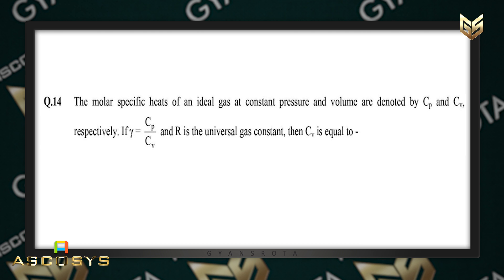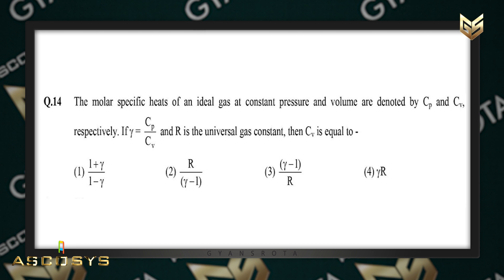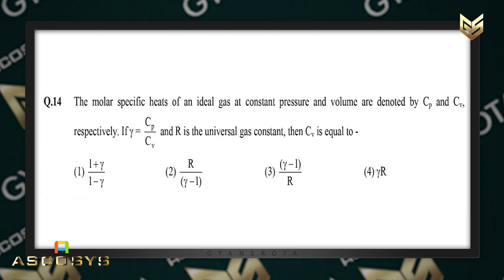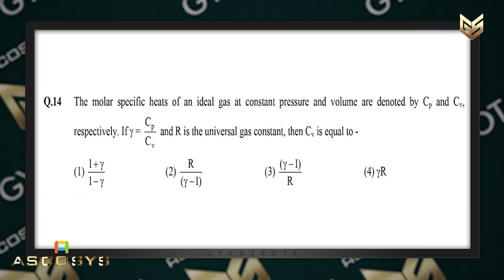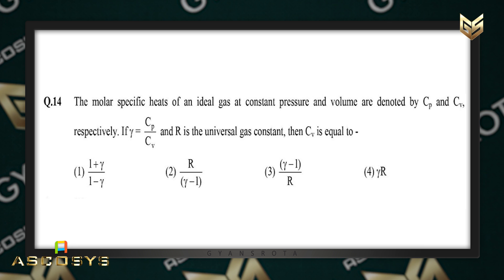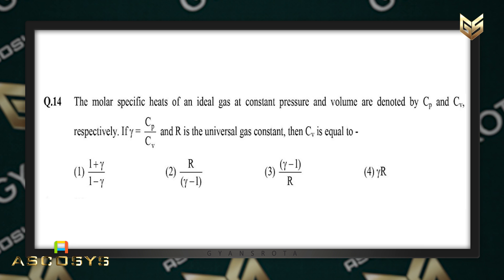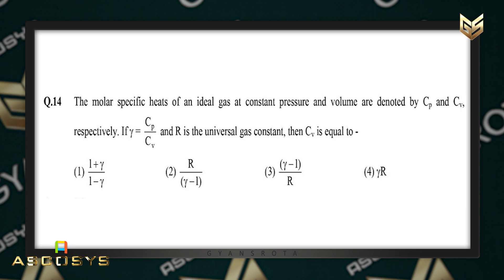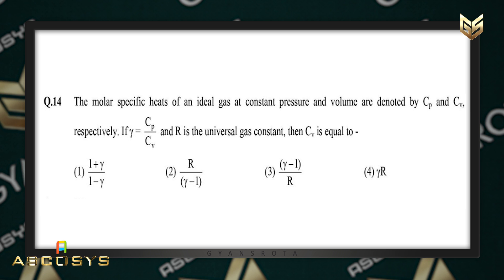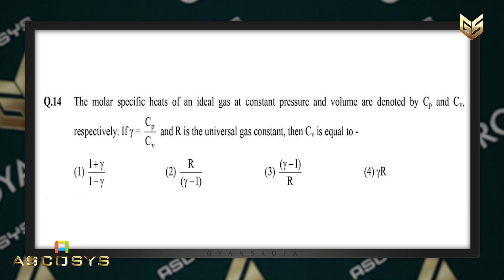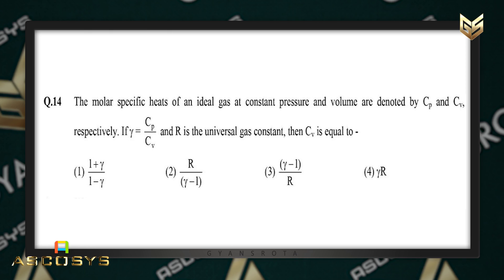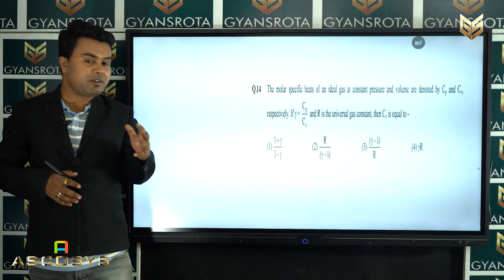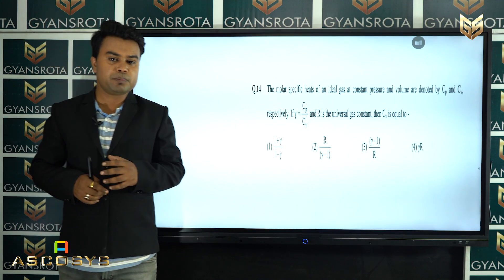The molar specific heat of an ideal gas at constant pressure and volume are denoted by Cp and Cv respectively. If gamma, that is the Cp/Cv ratio, and R is the universal gas constant, then Cv is equal to — let us see the solution part of this.